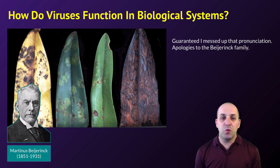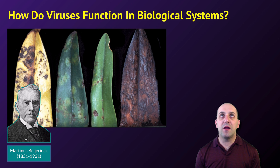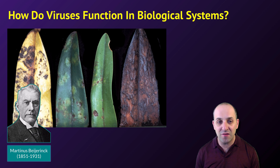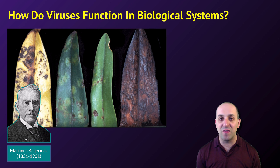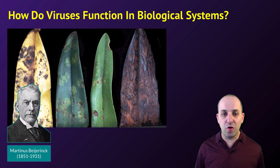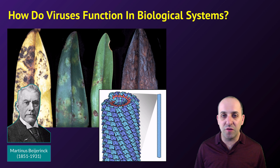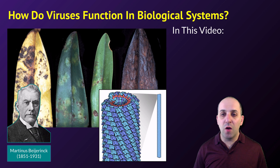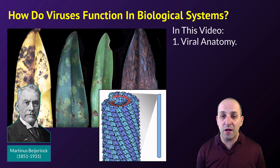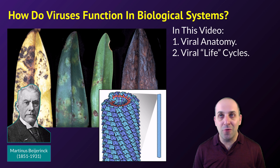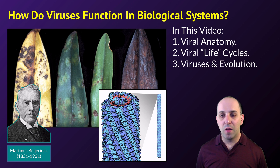Viruses were first discovered by Martin Beijerinck at the end of the 1800s. He was doing experiments with plants and looking at a disease called mosaic disease, trying to isolate the pathogen that caused it. It turned out to be smaller than any known organism at the time — it was caused by the tobacco mosaic virus, which is much smaller than even the smallest cells. In this video we'll cover viral anatomy, viral life cycles, and how viruses function in evolution.